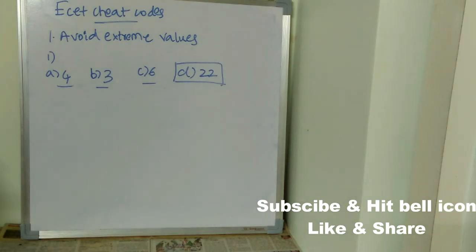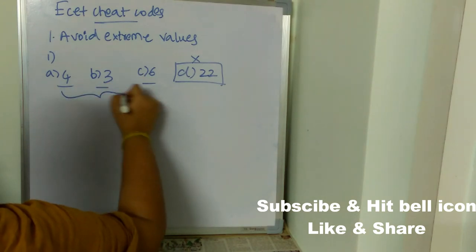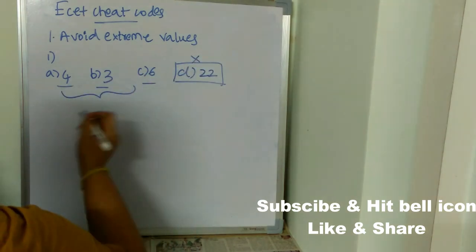When you are trying to guess the answer, don't go for extreme values. The correct answer is going to be one out of these three but not 22. Always avoid extreme values while you are guessing the answer.